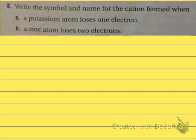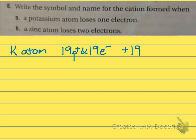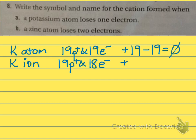Number eight: write the symbol and name for the cation formed when — letter A — a potassium atom loses one electron. Potassium has atomic number 19, so it has 19 protons and 19 electrons, giving a charge of zero. As an ion, it still has 19 protons but now has 18 electrons, so plus 19 minus 18 gives us a charge of plus 1. The symbol would be K with a superscript charge written on the right-hand side.